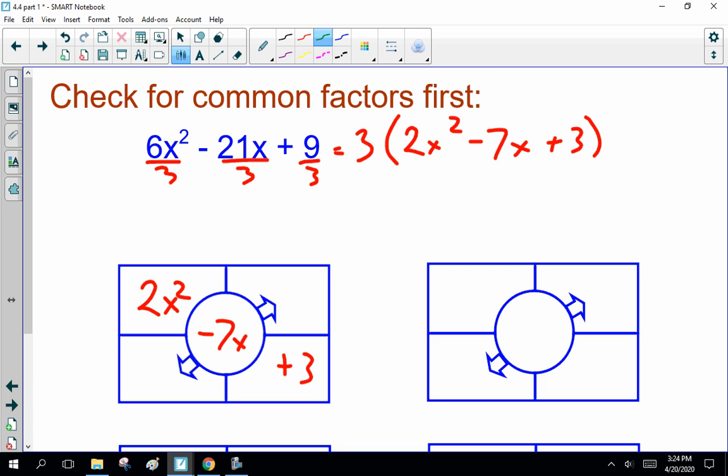So, factors of 2, 1 and 2. Now, the question is, what are the factors of 3? Well, your first thought is 1 and 3, but that gives you positive numbers. That gives you everything positive, so that doesn't work. So, it must be negative 1 and negative 3, minus 1 and minus 3. So 2 times 1 is minus 2x, 1 times minus 3x. Now, that gives you minus 5x, so that doesn't work.